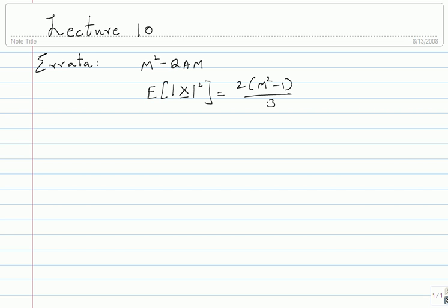I will briefly summarize for M squared QAM. For the rest of this course we will be dealing with M-PAM and M squared QAM. I will point out some other modulation schemes — offset QPSK, pi/4 QPSK, minimum shift keying, continuous phase modulation — just for completeness, but we won't go into detail. The area of digital communications is vast, but to simplify a first course we concentrate on M-PAM and M squared QAM, which are what is used in practice today.